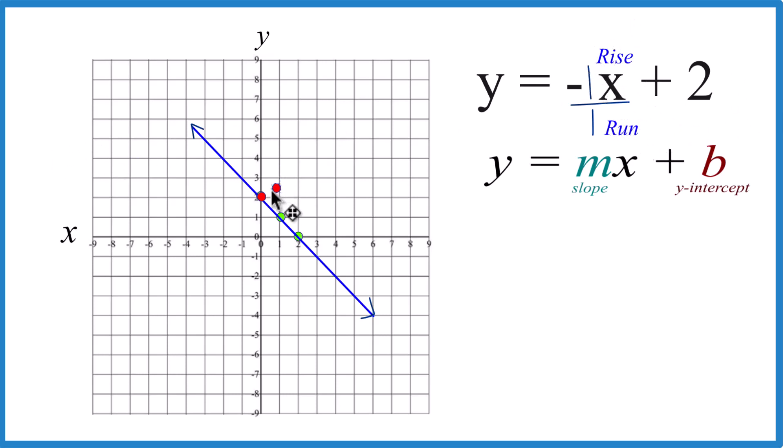And I can go to that y-intercept, and normally I would rise 1, run 1. But since it's negative, I need to go down 1, run 1. From there, down 1, run 1, you can keep going, down 1, run 1, and all these points are on our line.